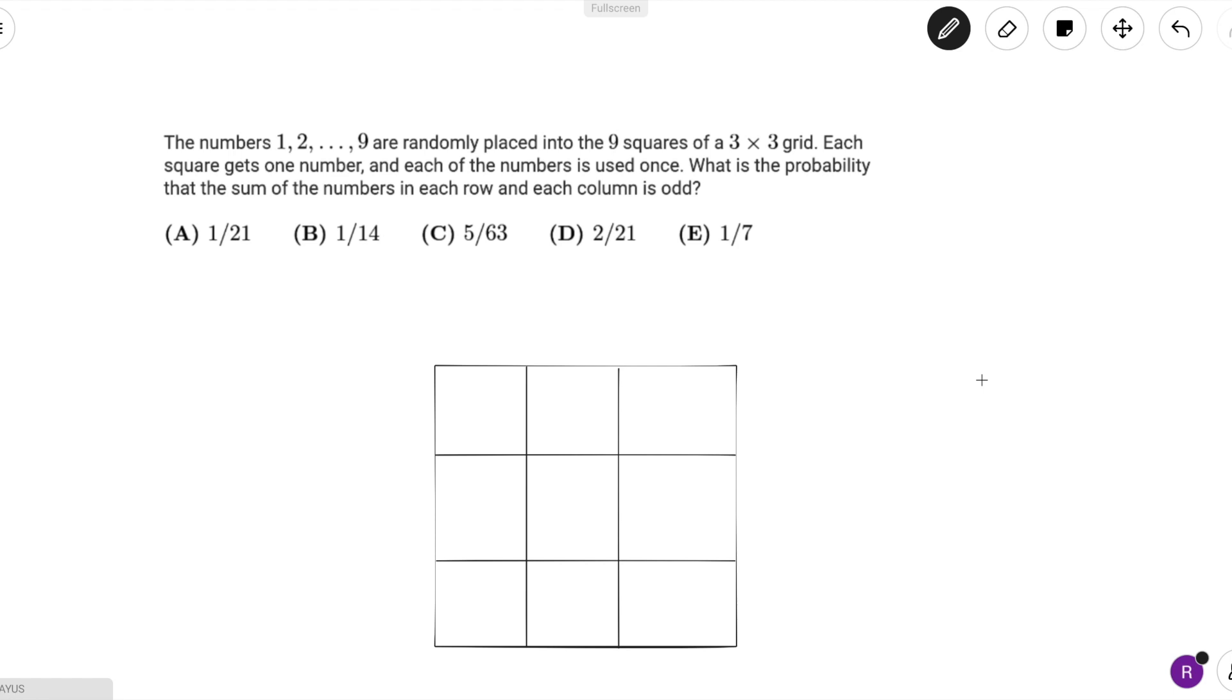Since we're only considering if the sum is odd or not, we just want to see what the parity of each of the numbers are, which basically means if the number is odd or even. There are five numbers that are odd, so let's just say that there are five O's that we can fit in this grid.